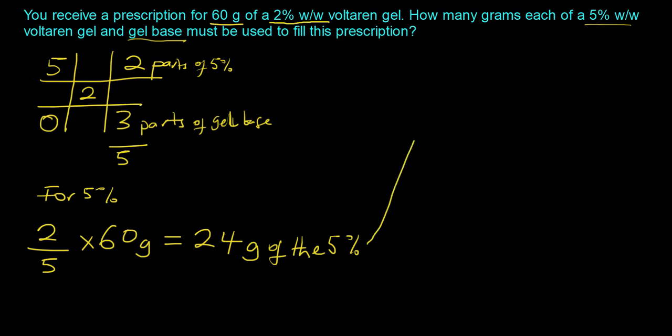Now, to figure out how much of the gel base, we could do that in two ways. We could repeat the process, so we will take the parts of the gel base, which is 3, so 3 parts, divide that by the total parts, which is 5, and then multiply by the total quantity, which is 60, and that should give us 36 grams.